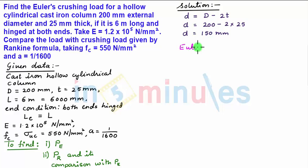Now we know Euler's crippling load PE is given as pi square EI upon LE square. So upon writing the formula of I which is moment of inertia of the hollow cylindrical column and LE,